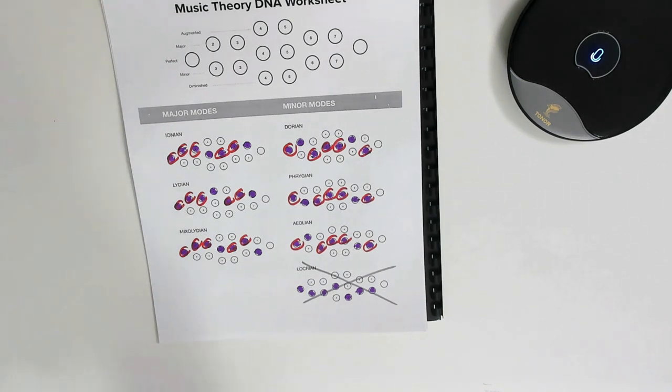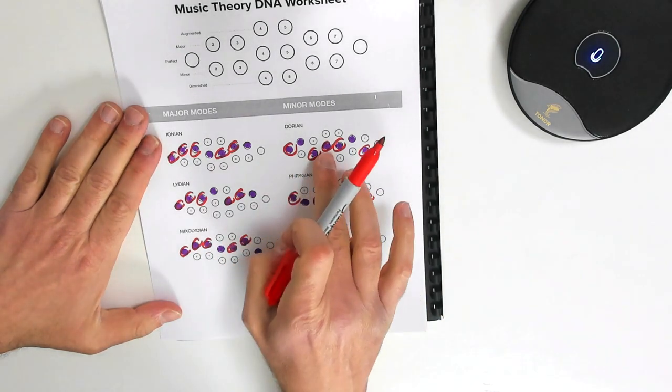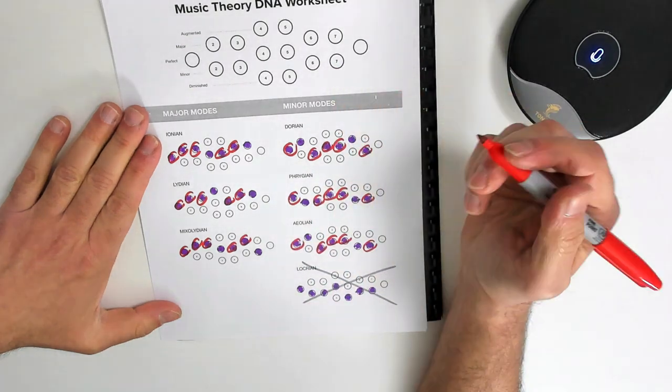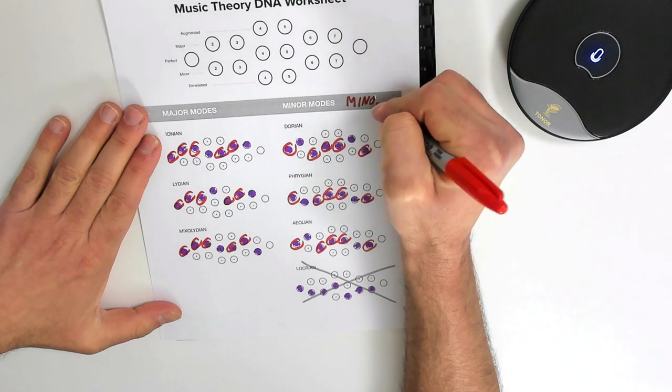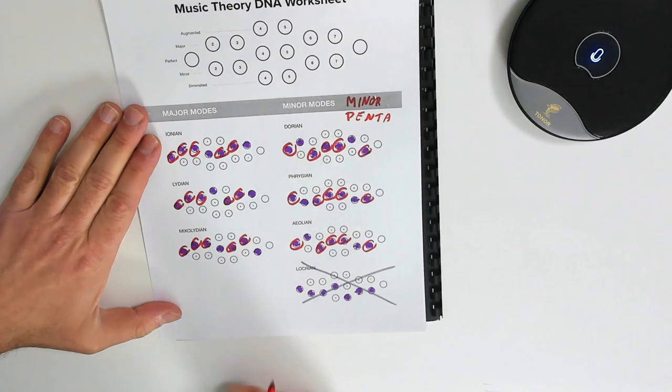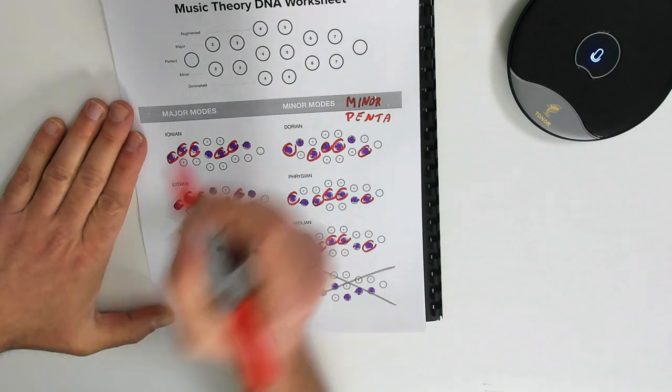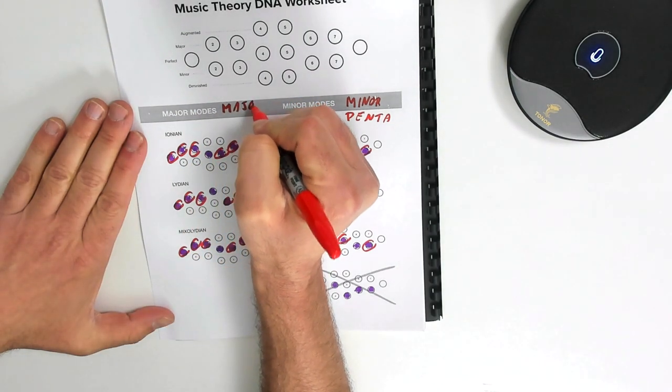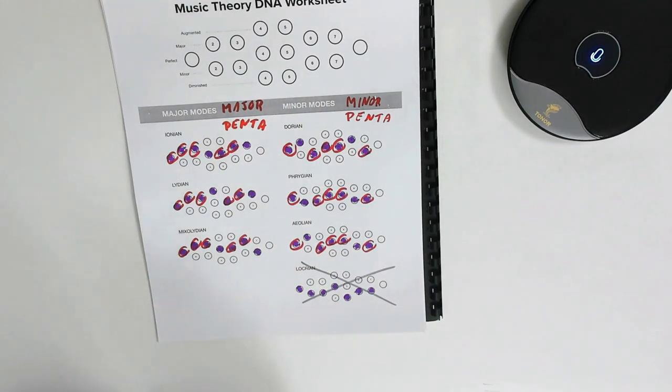All right. These five notes, most likely you know what they are. I'm going to keep a red here. These five notes, as you play them, minor pentatonic. That's a minor pentatonic scale. That's awesome. So we're going to call this, we're going to put a note here, minor penta. The five notes common to these three major modes, that's also a pentatonic and that's a major pentatonic.